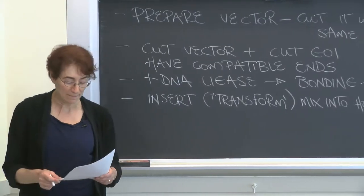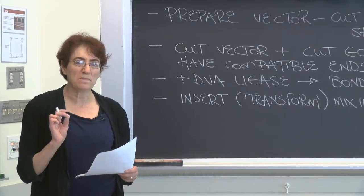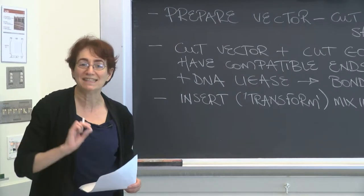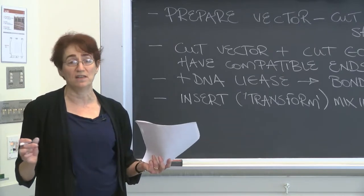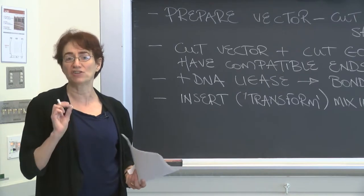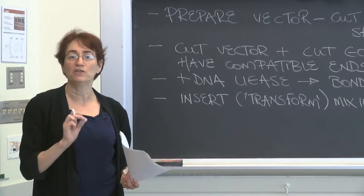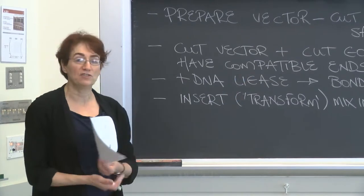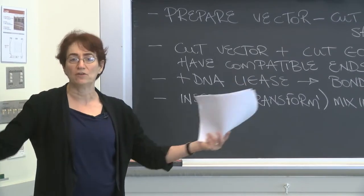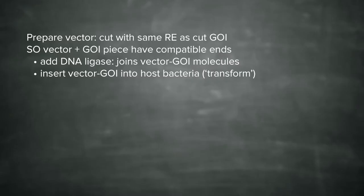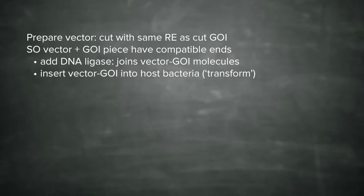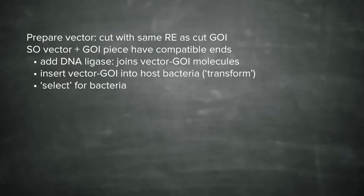Not all the bacteria are going to get one of these recombinant DNA molecules inserted into them — in fact most won't. It's only a tiny fraction of a percentage that are going to get a molecule of vector plus gene of interest inserted. So you want to get rid of all the bacteria that don't have your recombinant clone. This is where the selectable marker comes in. You select for bacteria that have got the vector plus gene of interest construct.